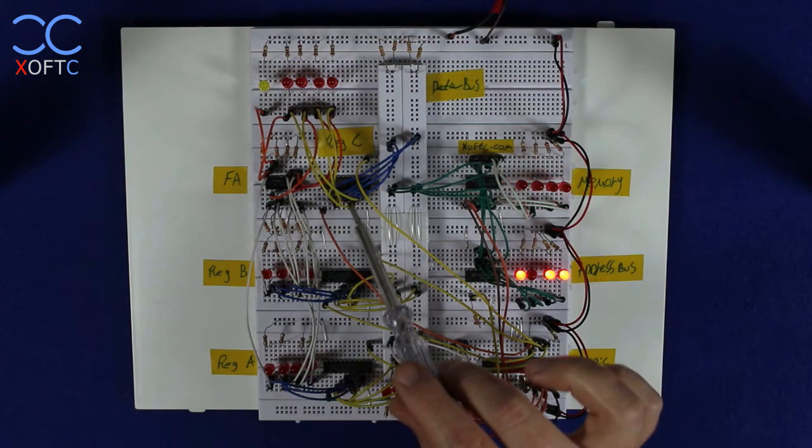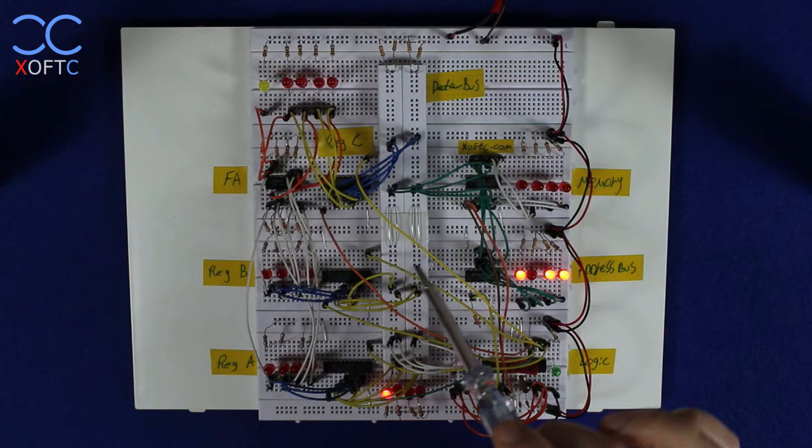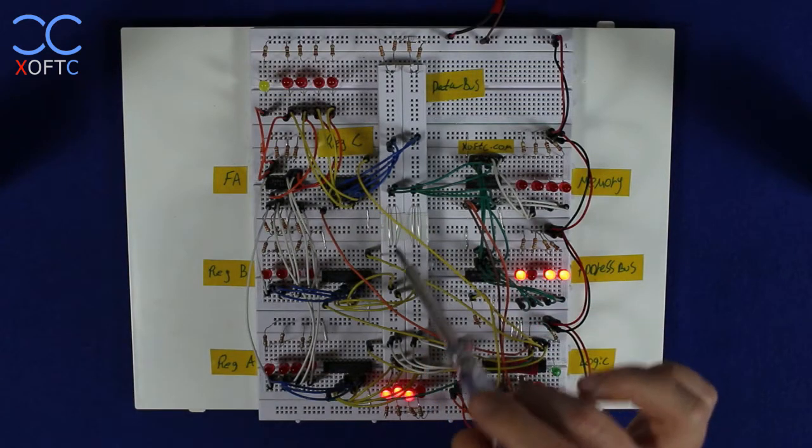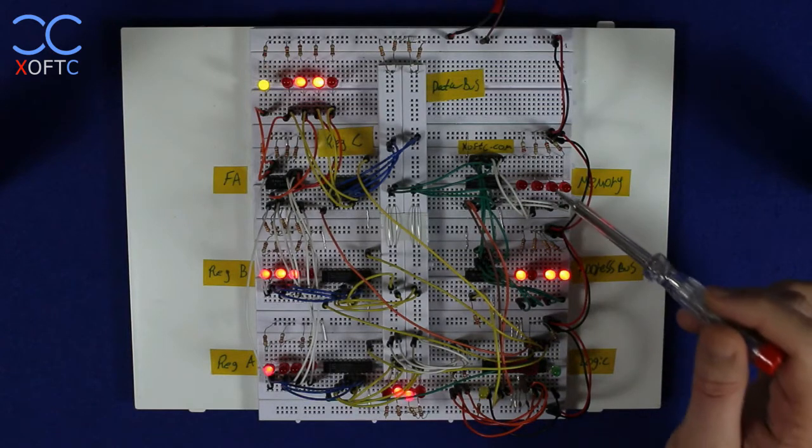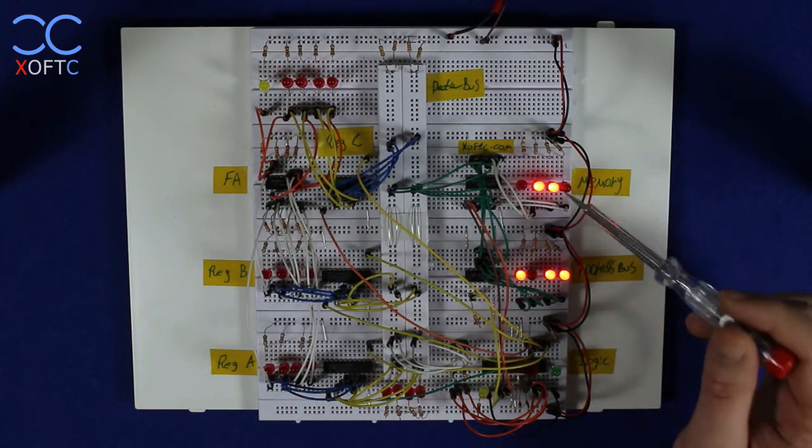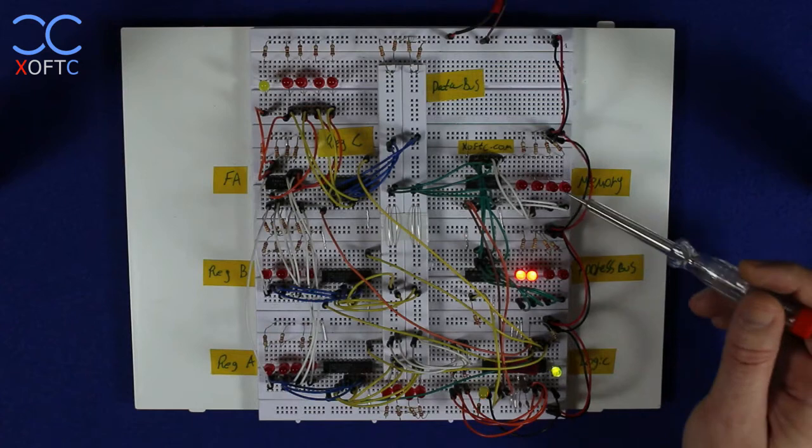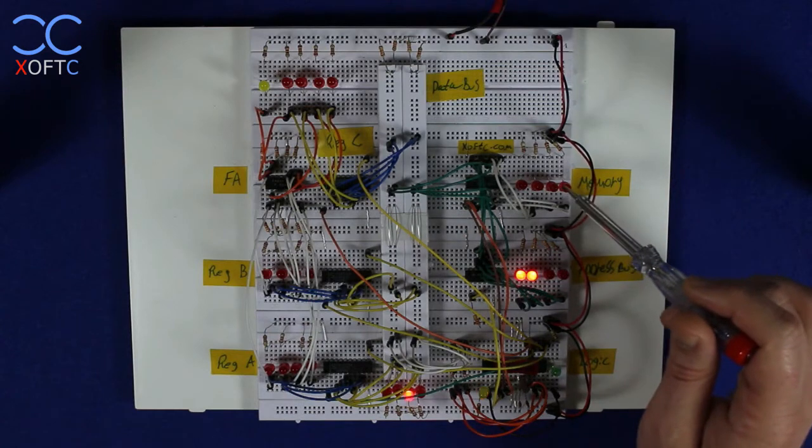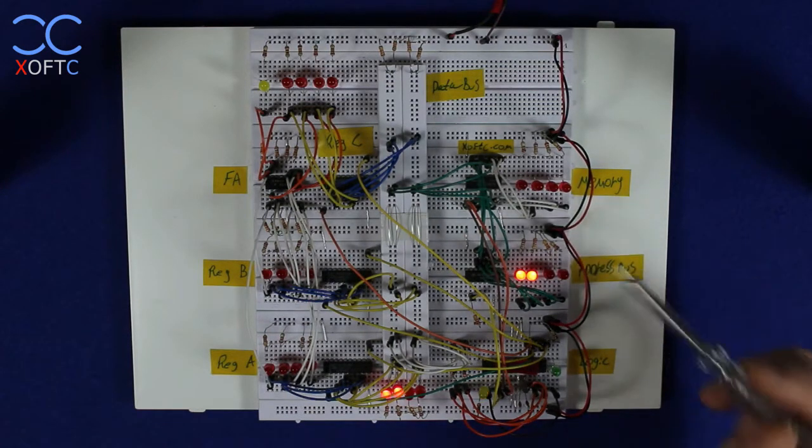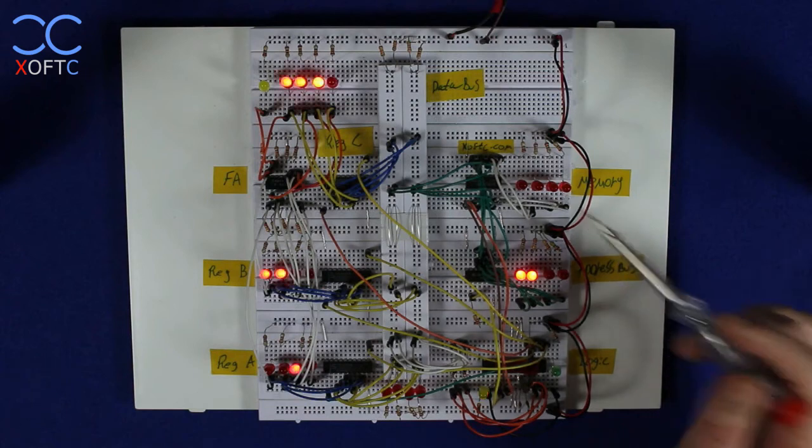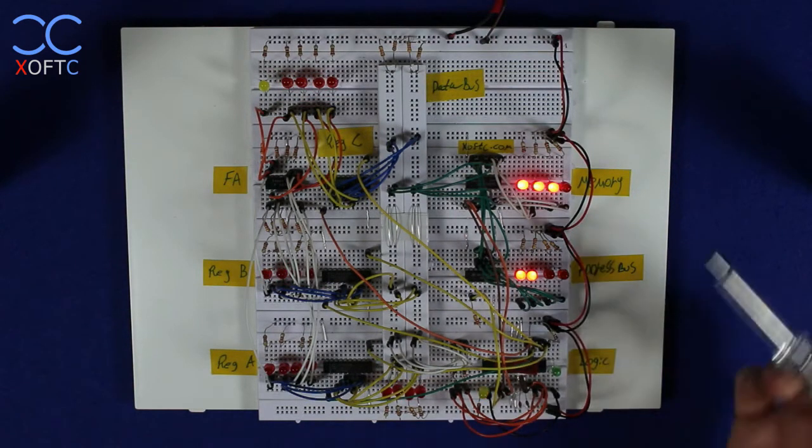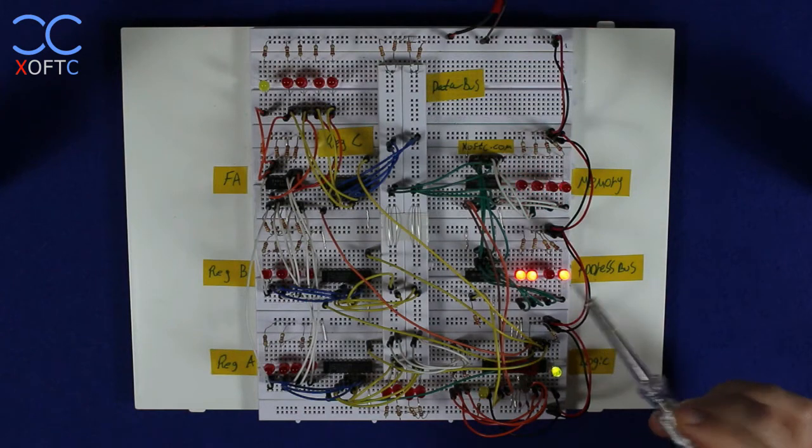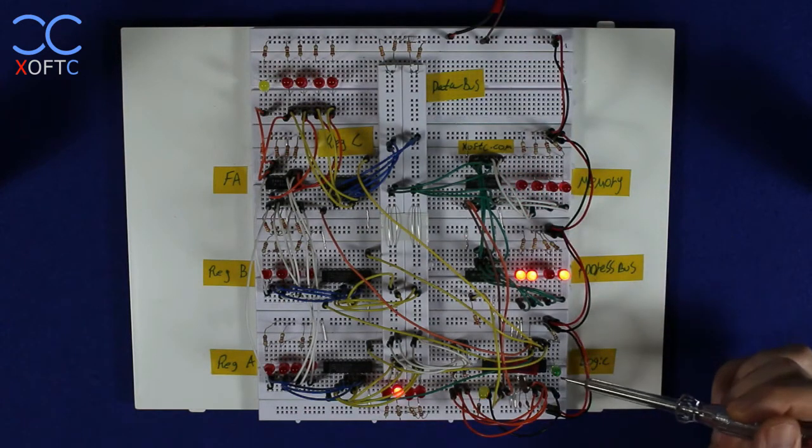From register C the value is placed back on the data bus and from the data bus it is written to whatever memory address we are calling. After it was written there is a call to read the value so we can see what we've actually read and then the address bus will raise itself by 1 so that we go to the next address and the cycle